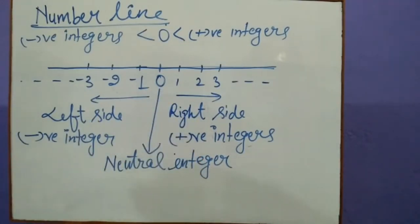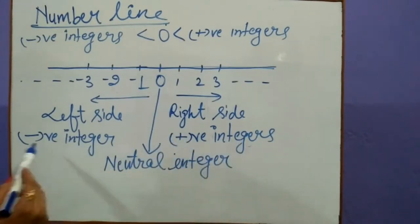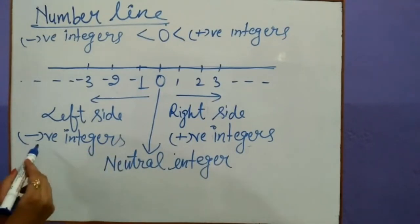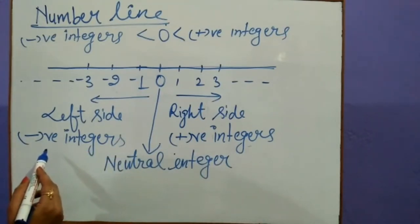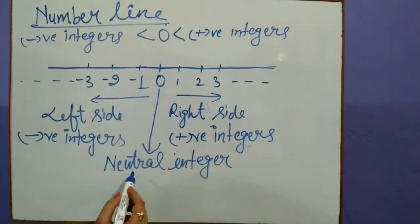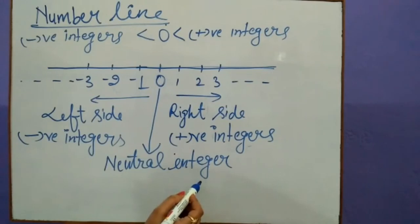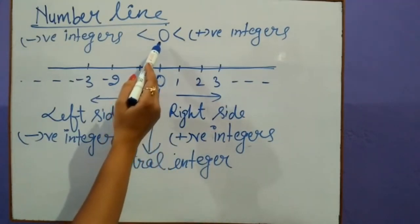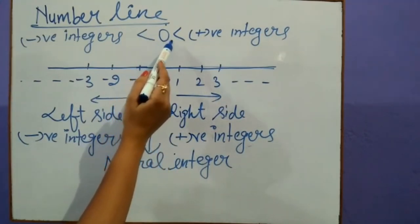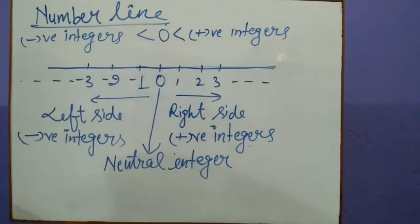On the right side, positive integers are there. On the left side, negative integers are there. And 0 is neither positive nor negative — 0 is a neutral integer. Also, 0 is less than positive integers and greater than negative integers.